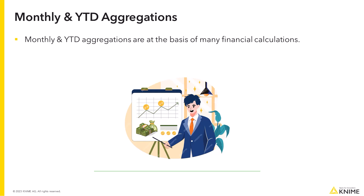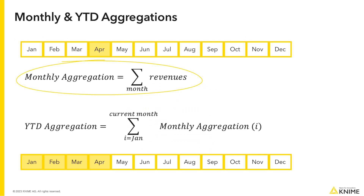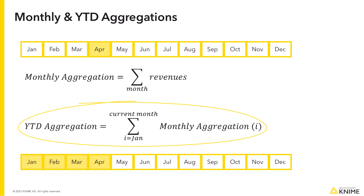Monthly and year-to-date aggregations are at the basis of many financial calculations. Monthly revenue aggregation is the sum of all revenues in a given month. Year-to-date revenue aggregation is the sum of the monthly revenues from the beginning of the year till the current month.